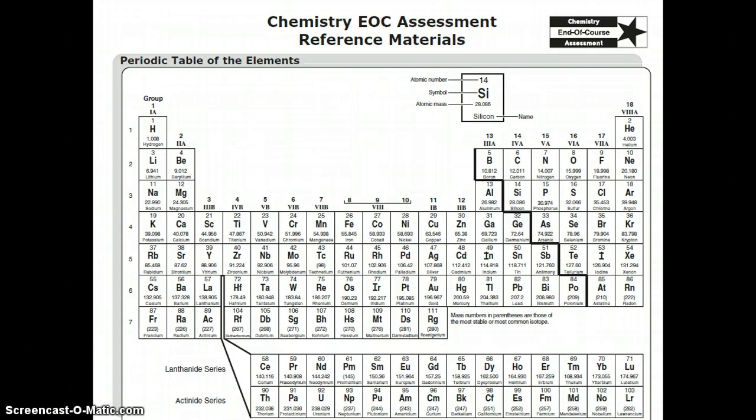You should have a worksheet that has your periodic table on one side, and it should look like this. This is the actual EOC assessment reference materials. So this is exactly the type of periodic table that you will receive when you take your end of course exams.